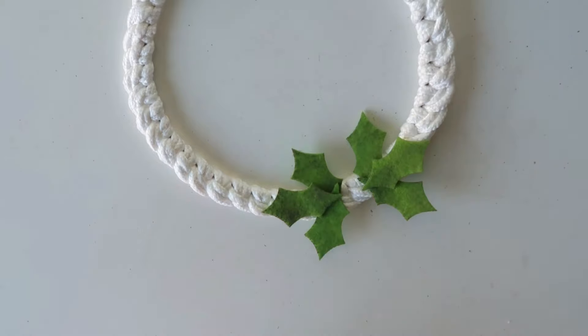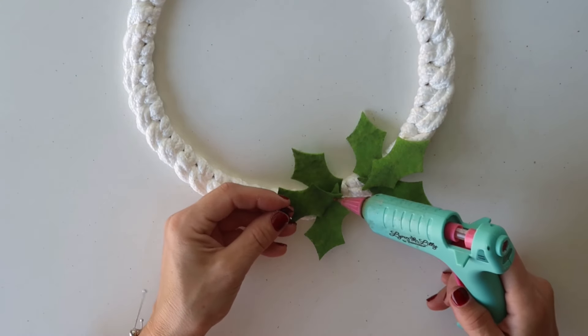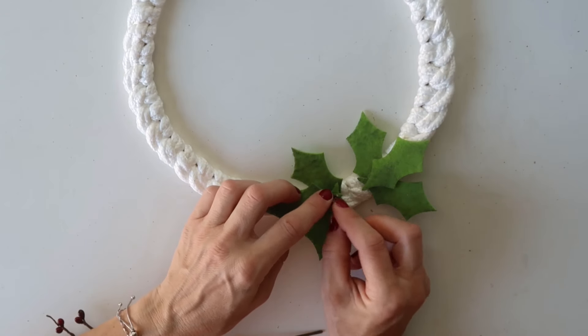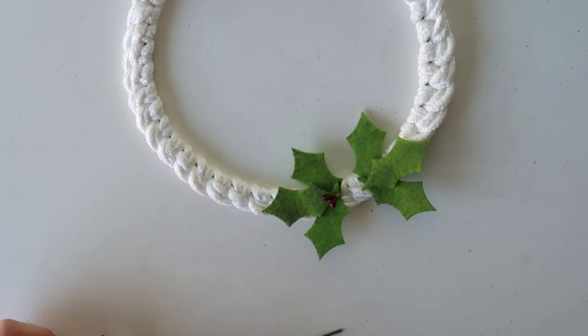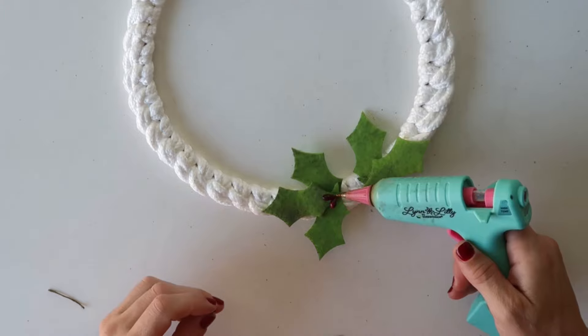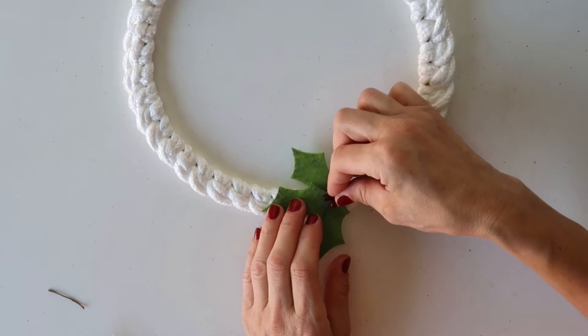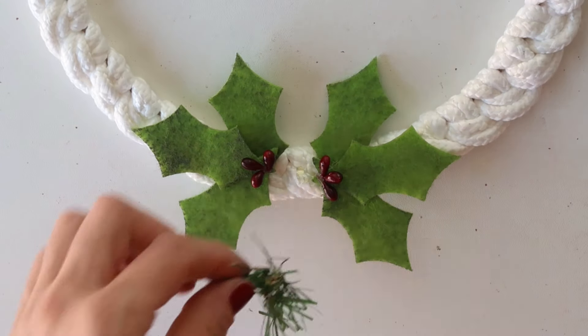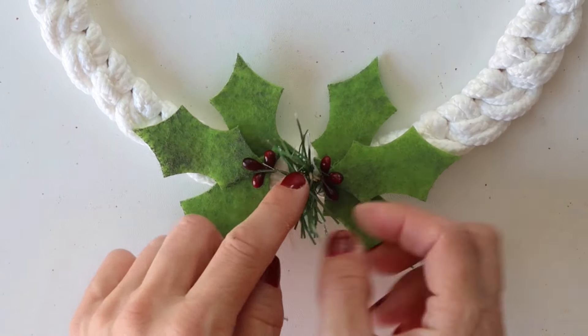And then I'm gonna also take these berries. I'm gonna take three of the berries and put on each side on the leaves. I'm using hot glue for this.